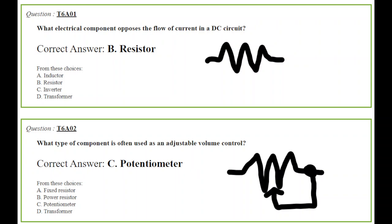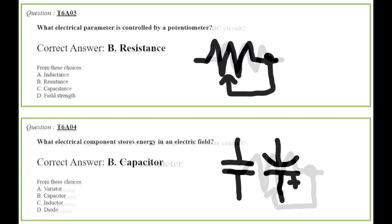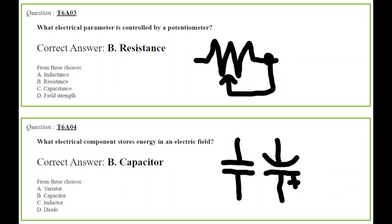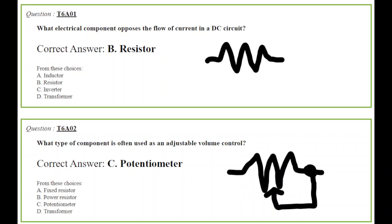Let's go to questions three and four. You're going to see what electrical parameter is controlled by a potentiometer. Well, I just told you that. It is the resistance that is controlled by the potentiometer, and you can see that wiper can go across that resistor. So if we go back and look at the other picture of a resistor, notice that a resistor has squiggles. The potentiometer also has squiggles, but it also has a wiper.